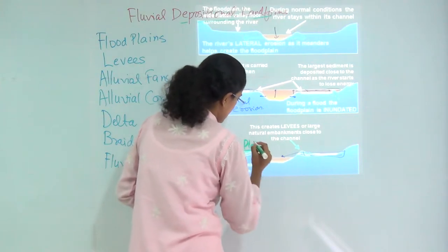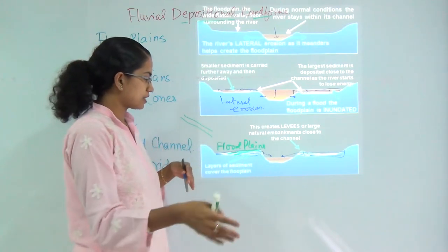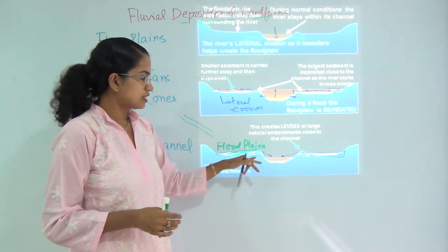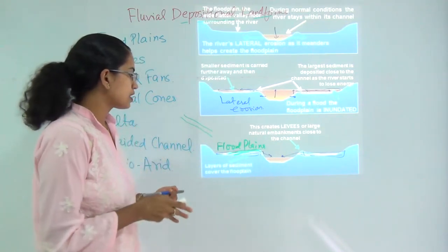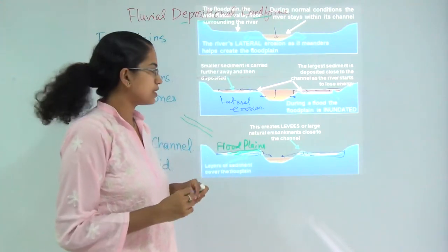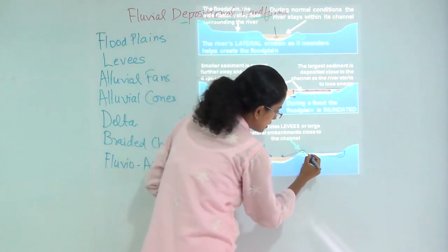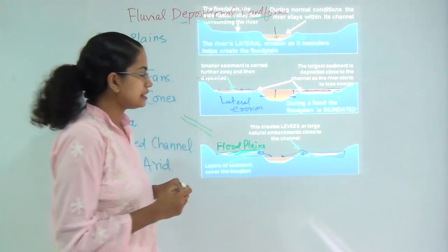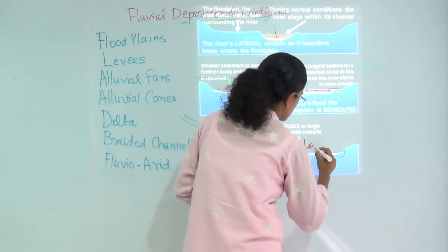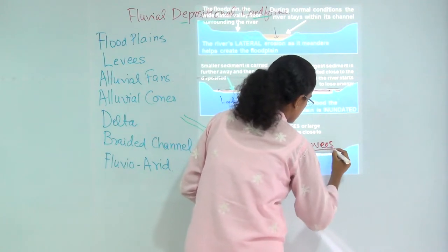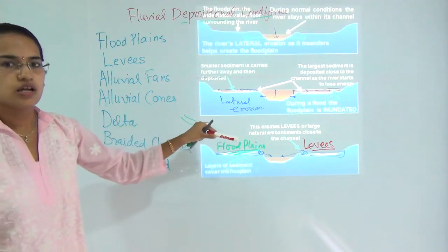Floodplains are areas drained by the river or where the river used to flow during high water, now left with large amounts of sediment brought by the river. When floodplains are formed, there are silt deposits towards the edge of the river, and these silt deposits are known as levees — high silt deposits found on the lower course of the river.